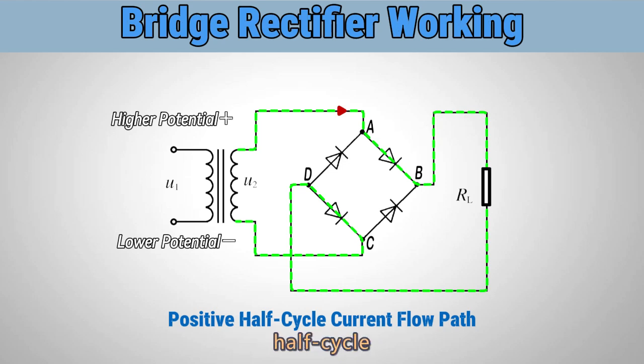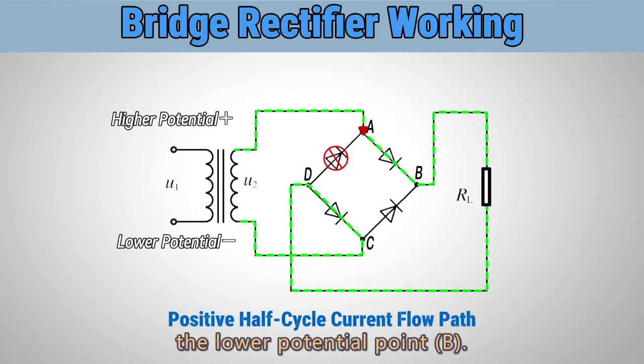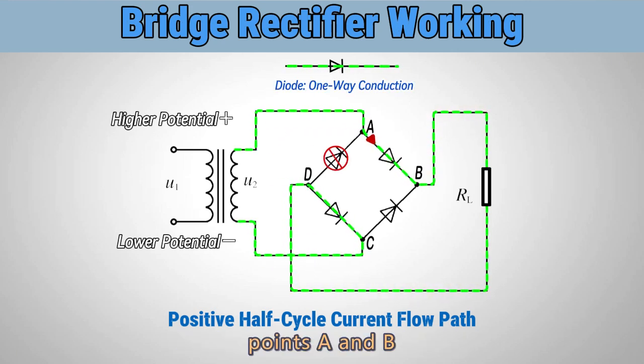During the positive half cycle of the AC voltage, the current flows from the higher potential point A to the lower potential point B. Diodes at points A and B conduct, allowing the current to flow in that direction.